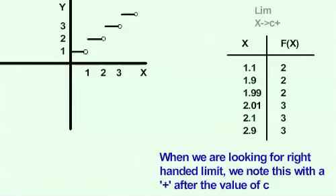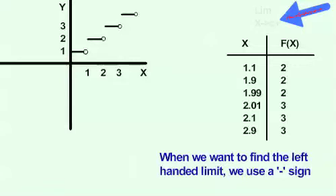When we are looking for the right-handed limit, we note this with a plus after the value of c. And when we want to find the left-handed limit, we use a negative sign.